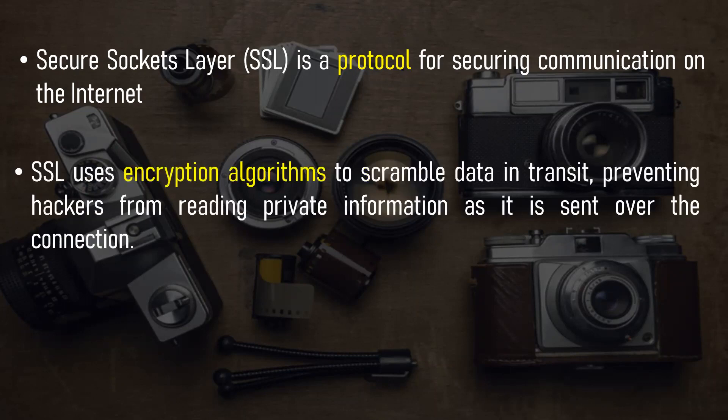SSL uses encryption algorithms to scramble data in transition, preventing hackers from reading private information as it is sent over the connection. When we say data is getting encrypted when transferring over the public network, that means you need certain programs, algorithms, or keys which can encrypt your data. And when it is reaching the destination, there has to be some way to decrypt that data. It is only encrypted when transferring on the public network; at the source and destination, it has to be in readable form. Different kinds of algorithms are used for encryption and decryption.